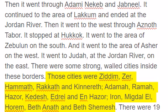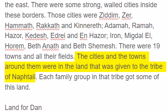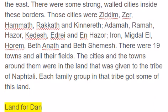Also Iron, Migdal-El, Horem, Bethanath and Beth Shemesh. There were nineteen towns and all their fields. The cities and the towns around them were in the land that was given to the tribe of Naphtali. Each family group in that tribe got some of this land.